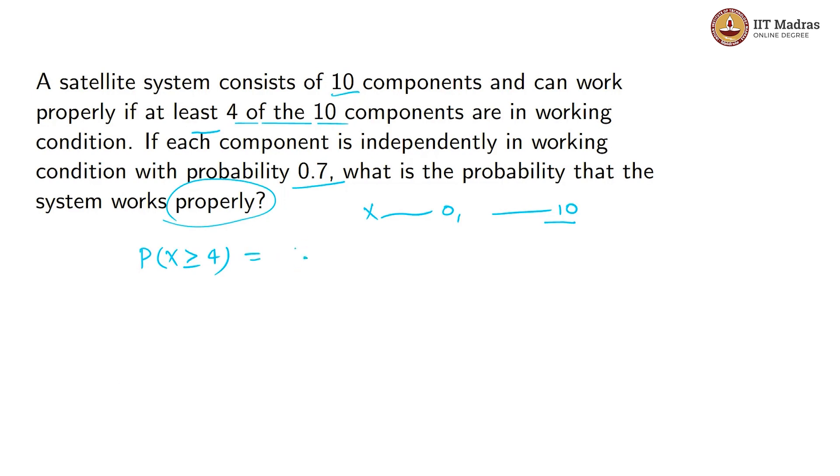This we can write as 1 minus probability X less than or equal to 3, and this further can be written as 1 minus the sum: P(X=0) plus P(X=1) plus P(X=2) plus probability X is taking value 3. This will be our value that the system will work properly.